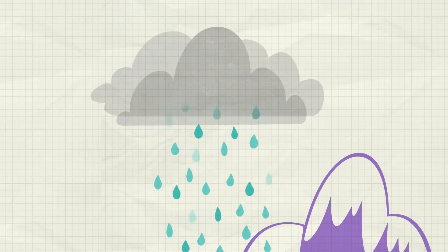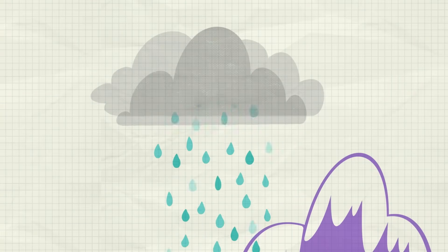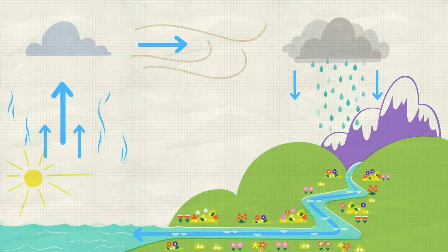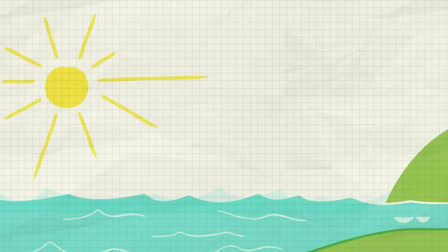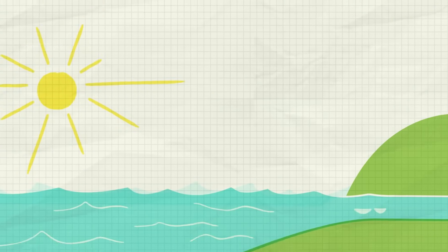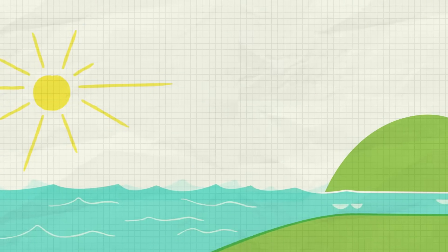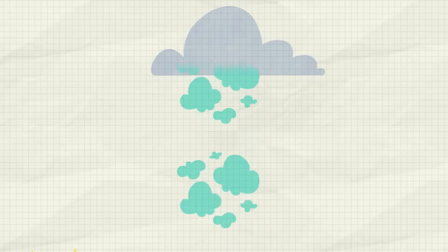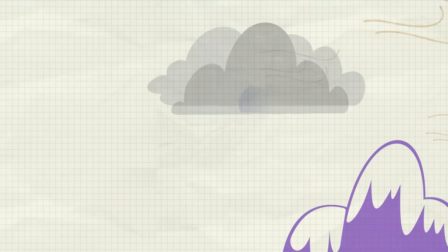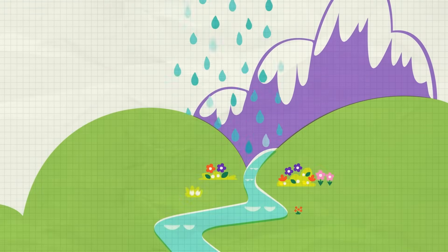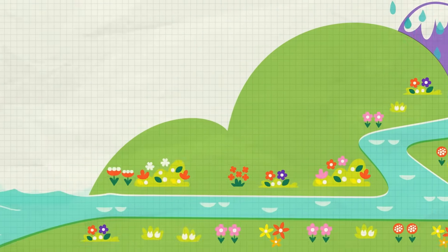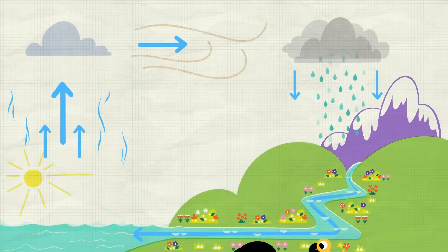Rain is part of the water cycle. The word cycle means circle. Some water on Earth travels in a circle — up into the air, moving with the wind, then down onto the Earth and back up again. Get it?